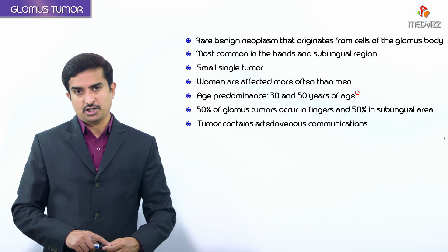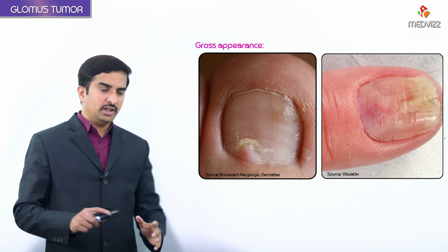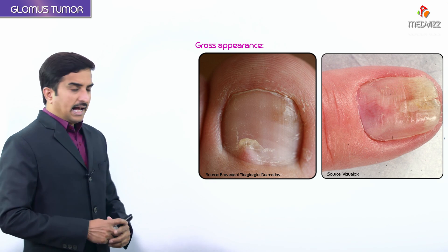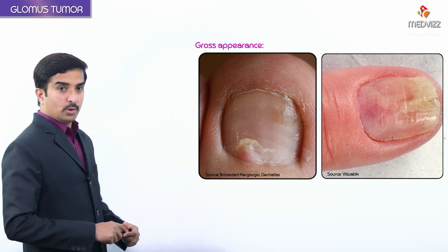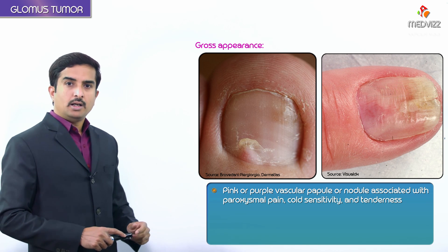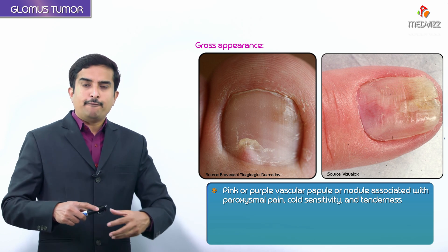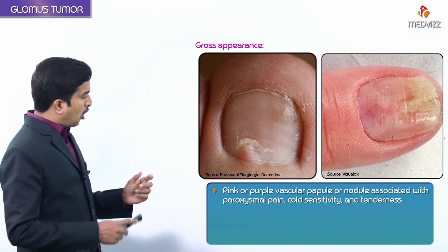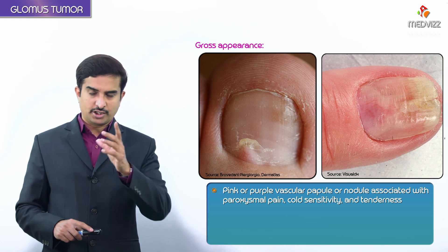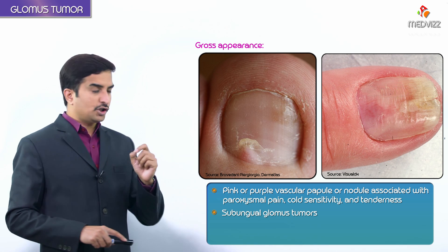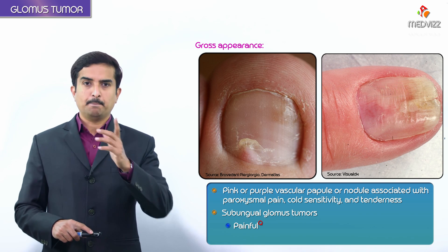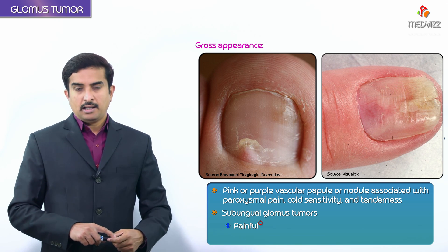Looking at the gross pathology, the sub-ungual glomus tumor presents as a pink or purple vascular papule or nodule. It is commonly associated with paroxysmal pain, cold sensitivity, and tenderness. Sub-ungual glomus tumors are particularly painful compared to other locations.